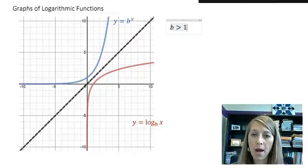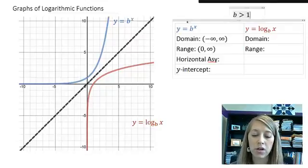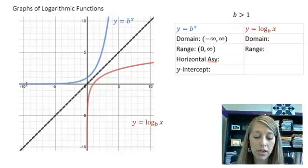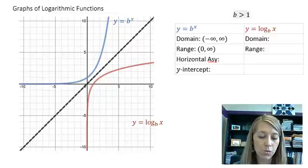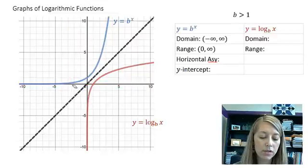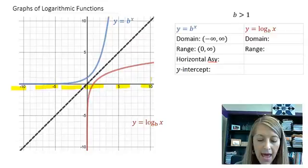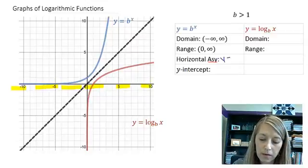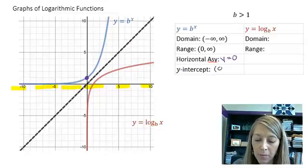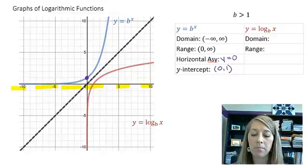Now we want to talk about the properties of this. We can recall the properties of exponential functions, so let's look at the blue graph first. The domain is from negative infinity to infinity. The range is from 0 and above, because that's where my blue function is defined. It has a horizontal asymptote at y equals 0, and a y-intercept at the value 1, because if I plugged in 0 as an exponent, I'm going to get out the number 1.